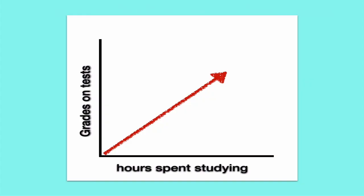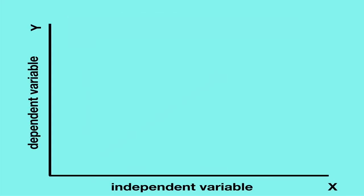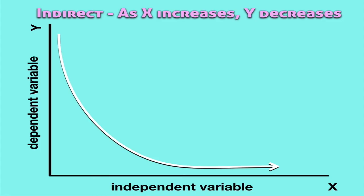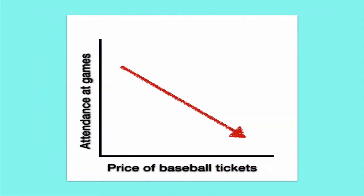In an indirect or inverse relationship, as the independent variable increases, the dependent variable will decrease. For example, if you increase the price of baseball tickets, the attendance at games will go down.